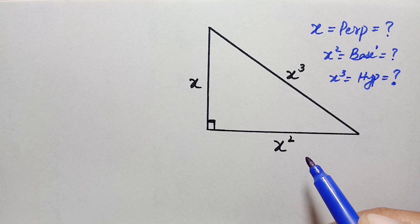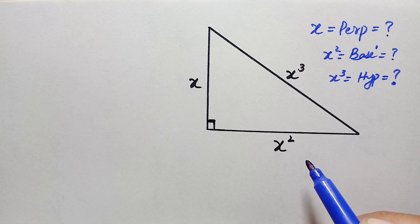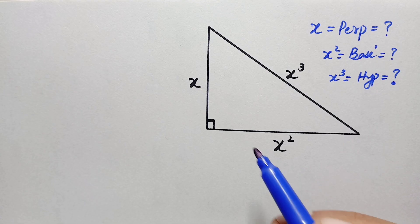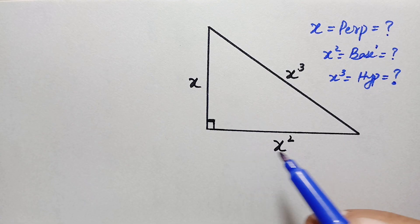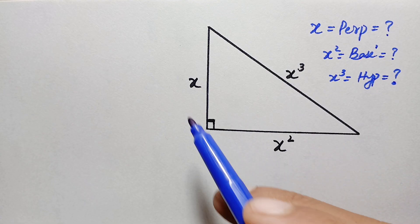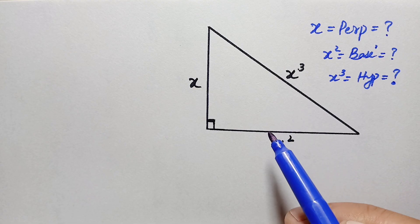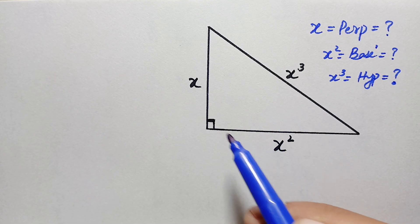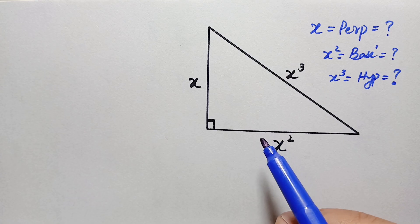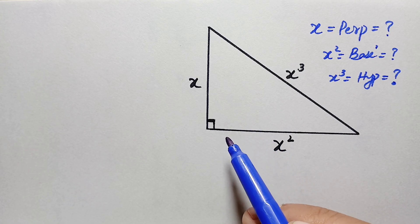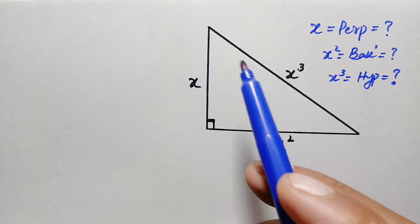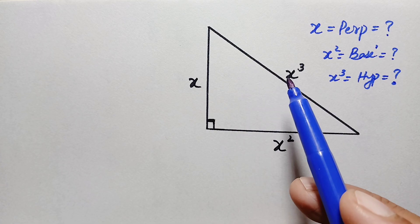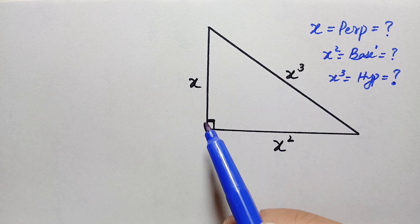Hello everyone, welcome. Today we have a very interesting geometry math problem. We are given a closed figure — a right angle triangle whose sides are given in terms of x. Our target is to find out the length of each side of this triangle. To do this, we will apply the Pythagorean theorem, because this is a right angle triangle. By the Pythagorean theorem, hypotenuse squared equals base squared plus perpendicular squared.